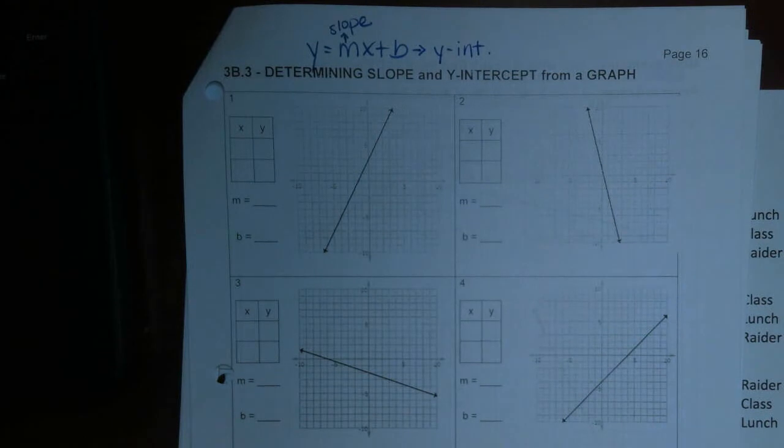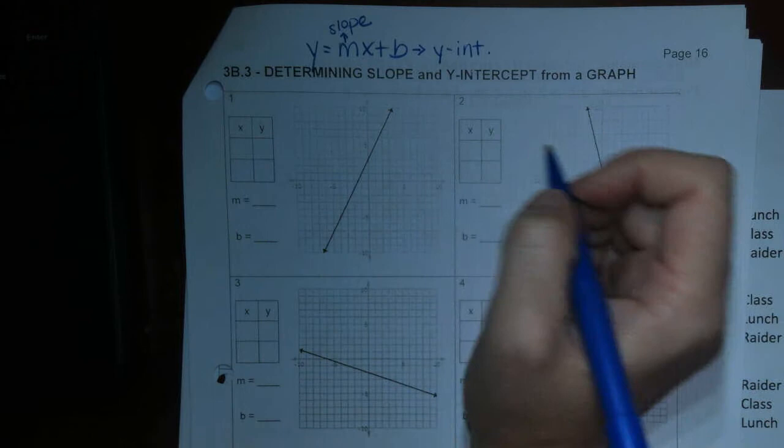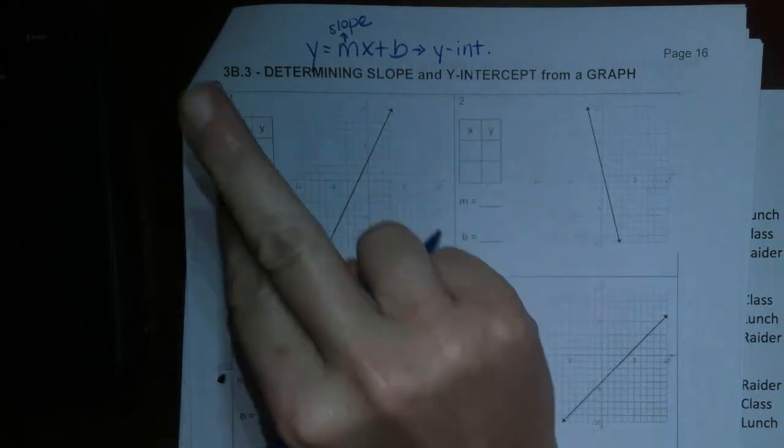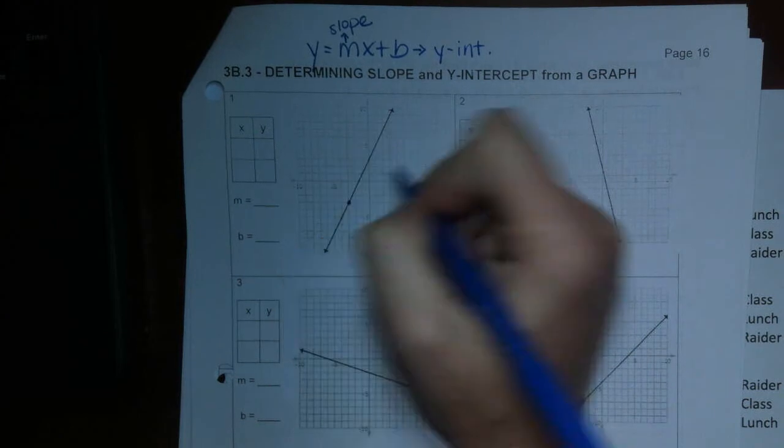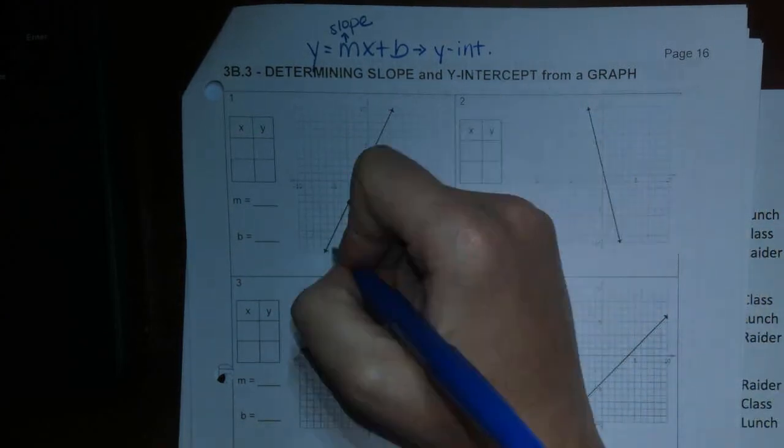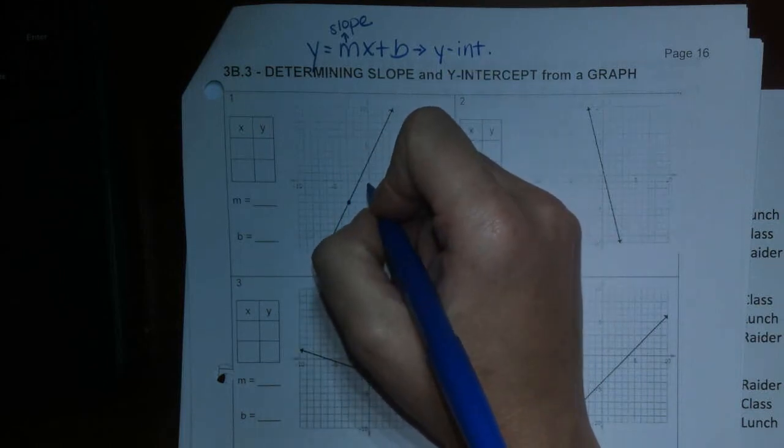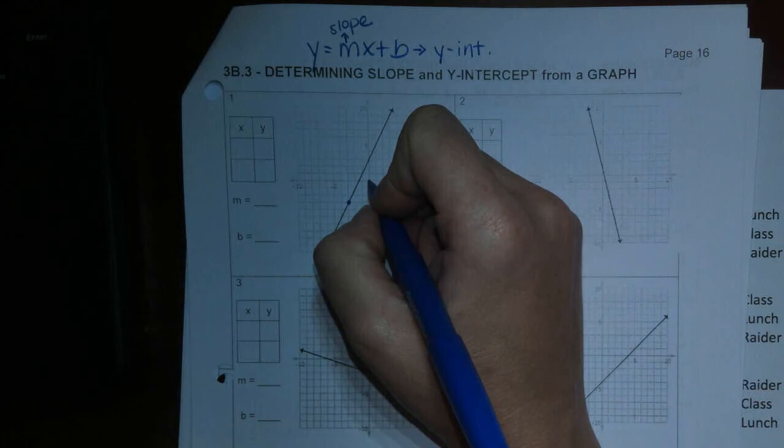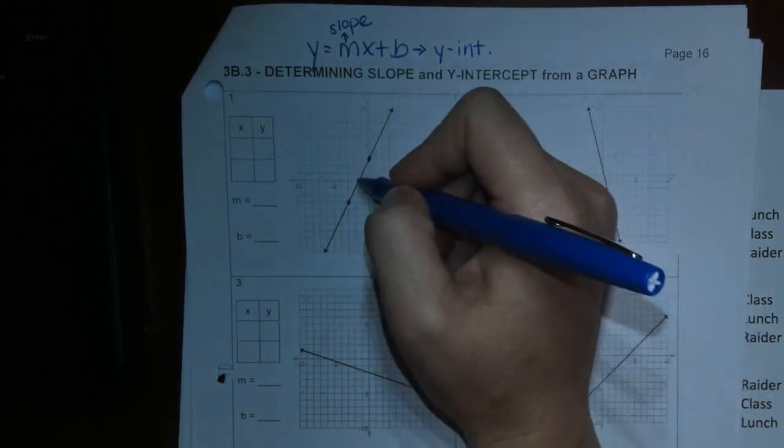All right, so we can look at this line. So what we're going to do, how we do this, is we're going to pick two pretty points, what I call pretty points. So a pretty point is where the line itself crosses through two points on the graph that are two lines that cross. So there's one right there. It's a good one there, and here's a good one.